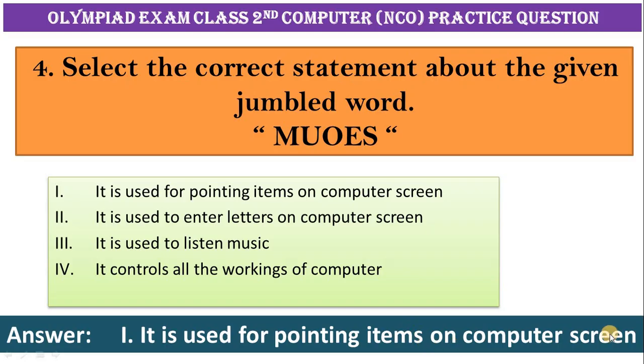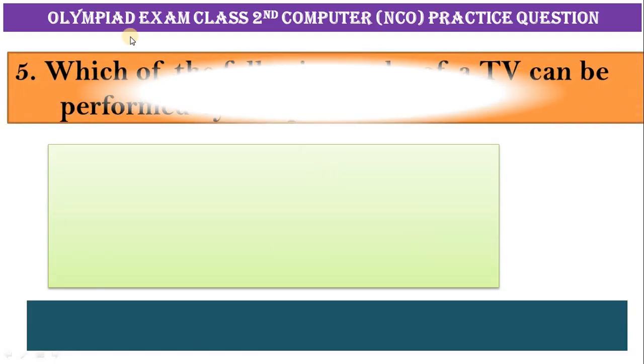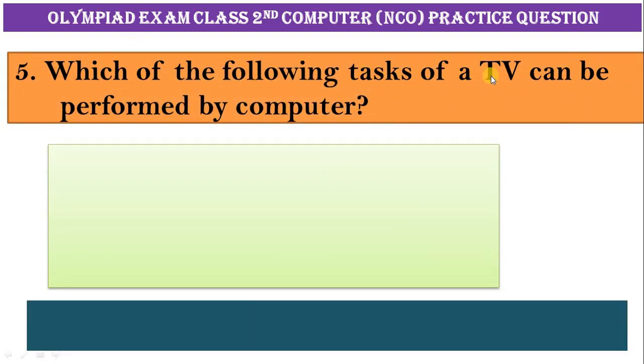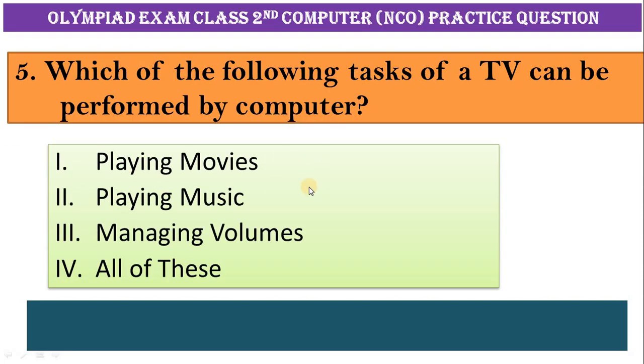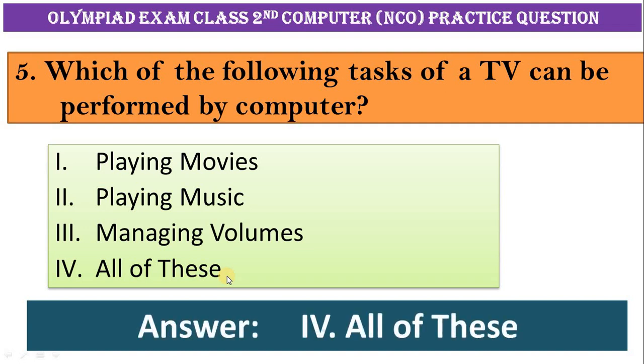Which of the following tasks of a TV can be performed by computer? A, playing movie. B, playing music. C, managing volumes. D, all of this. Correct answer is option four, all of this.